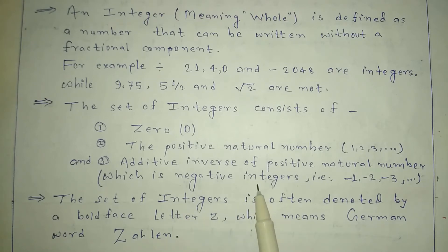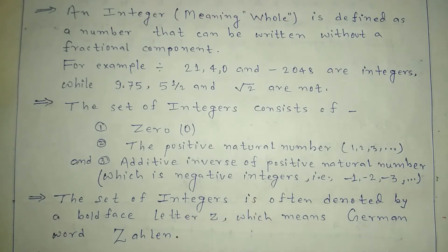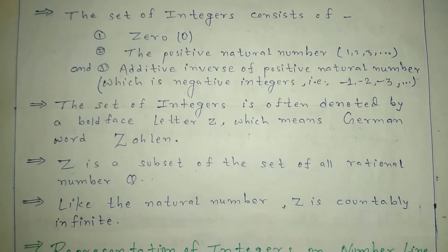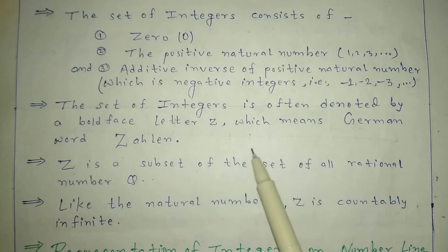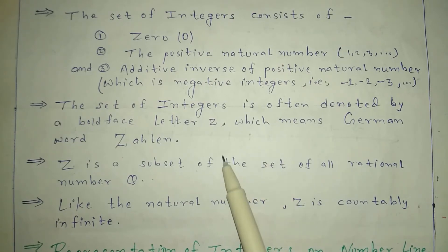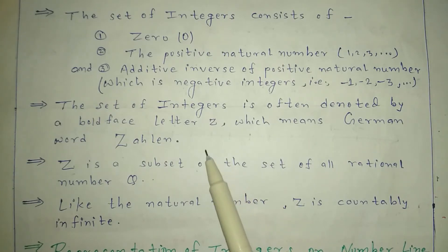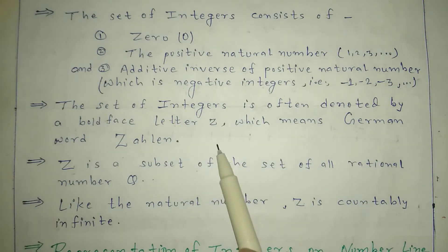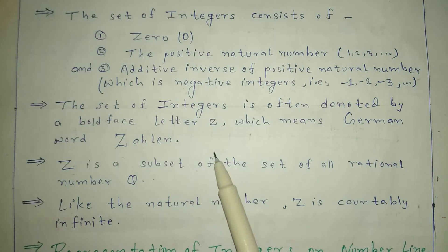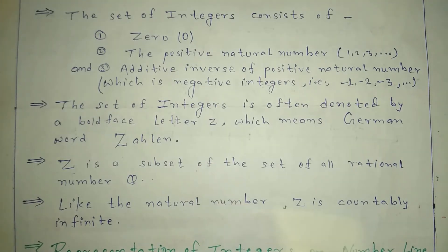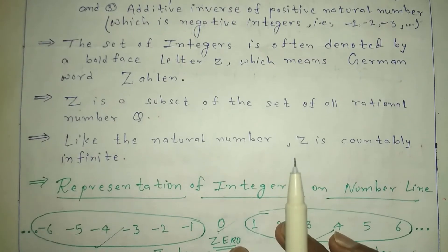The set of integers is often denoted by the bold-face letter Z, which comes from a German word. So integers are generally denoted by the letter Z — it stands for the German word for numbers.